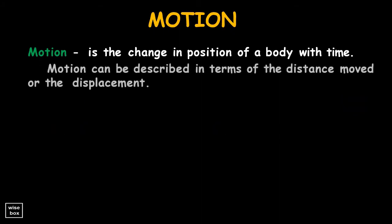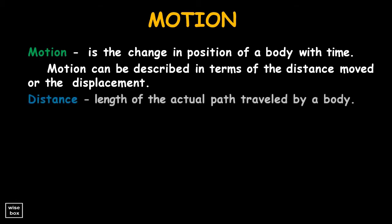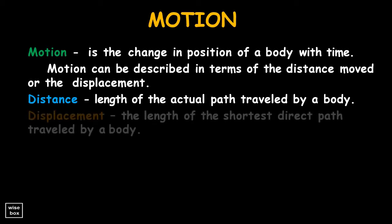Motion can be described in terms of the distance moved or the displacement. Distance is the length of the actual path traveled by a body. While displacement is the length of the shortest path traveled by a body from its initial position to its final position.